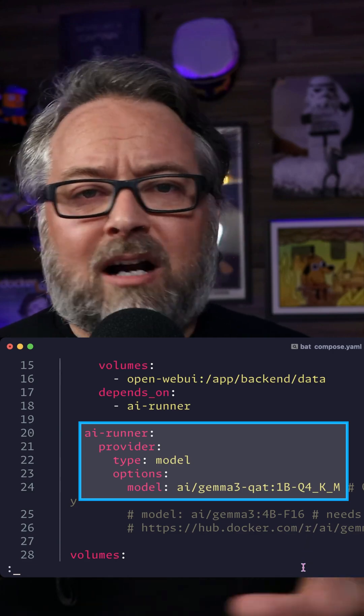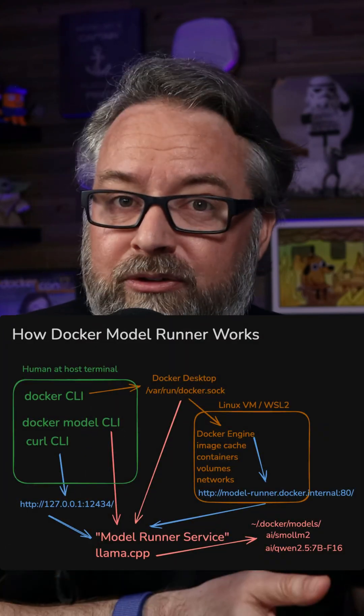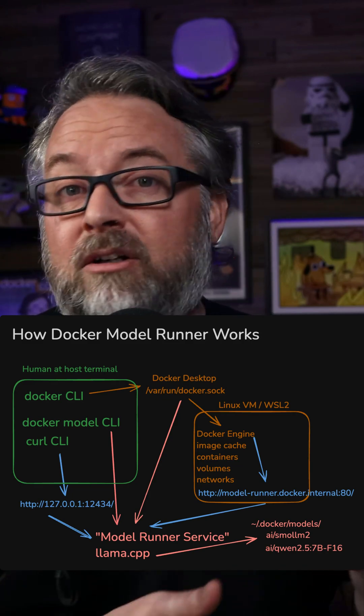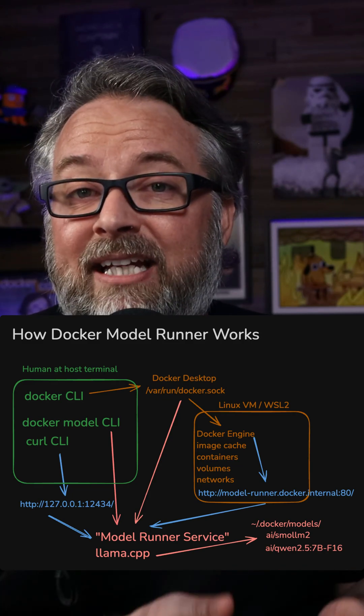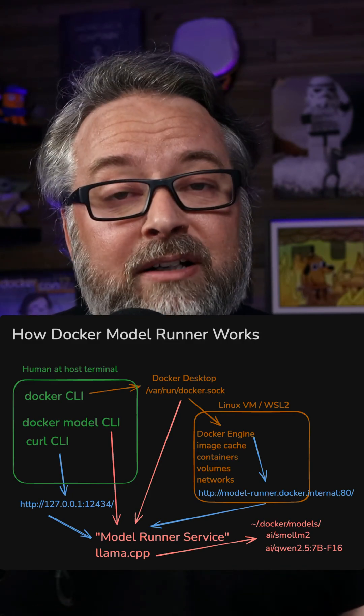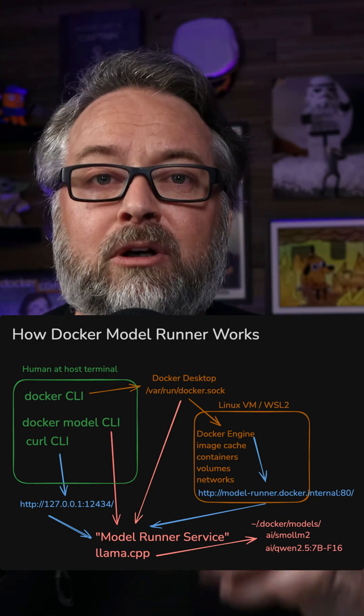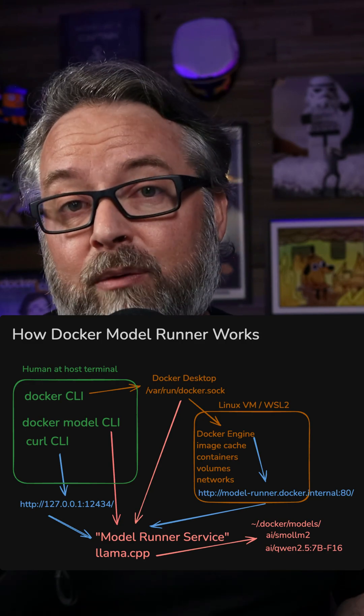Under the hood, Docker isn't running these models in a container yet, because the ecosystem tooling isn't there for making the GPUs work as well as they would inside a local desktop's VM. So for now, they're running on your host. These models are stored in your user directory, and you can access the inference web server URL from inside your Docker networks. If you enable the TCP port, you can access them from the host OS or even your local network.